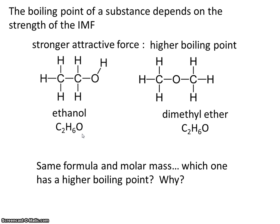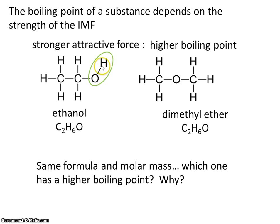So if we want to know which has a higher boiling point, ethanol or ether, we would have to take a look at which one has a stronger attractive force, or which one has a stronger IMF. That requires us to look at the molecule carefully. In doing so, you would see that here we have a hydrogen bonded to oxygen, which is a highly electronegative element. So this molecule is going to display hydrogen bonding.